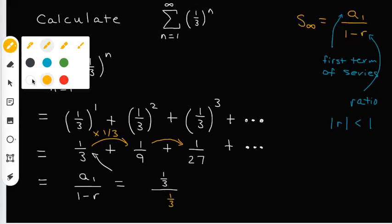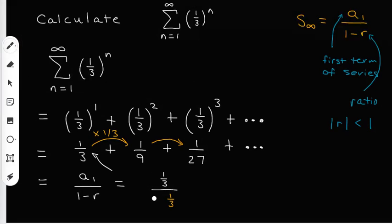At the bottom of the fraction, I'm going to get one minus one-third. So the top can stay the same for now. But on the bottom, one minus one-third is going to give me two-thirds.